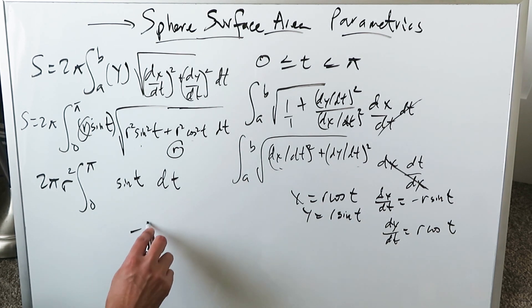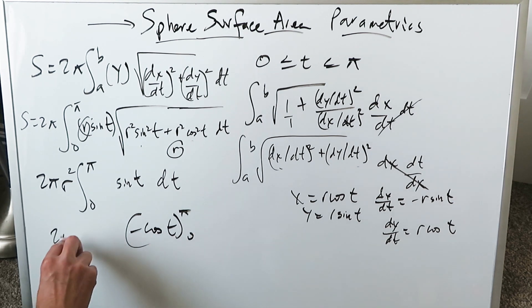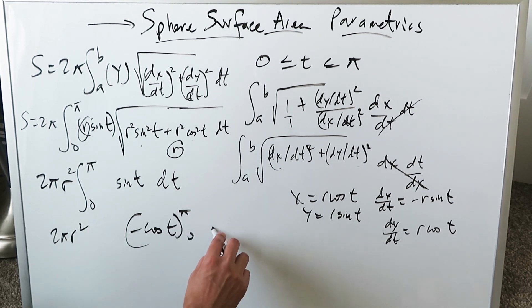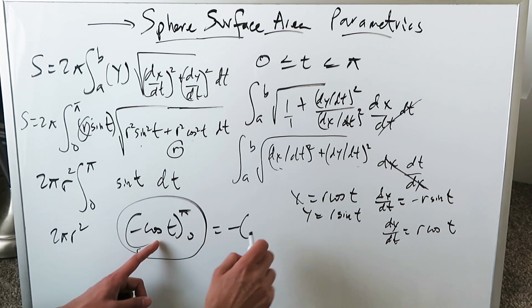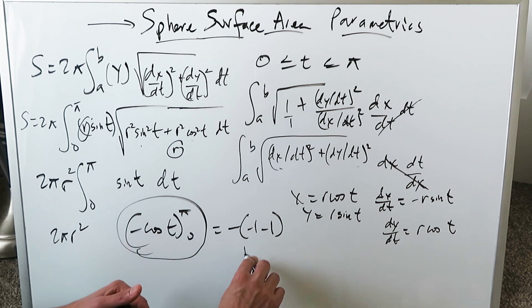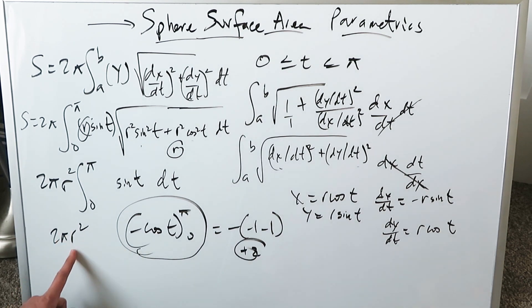The antiderivative is -cos(t) from π and 0. You have 2πr². You're going to get from right over here -cos(π) is -1. -cos(0) is a positive 1. Here you're getting a minus, minus 2 which is a plus 2. This will multiply with this and you'll have 4πr², and the procedure is completed.